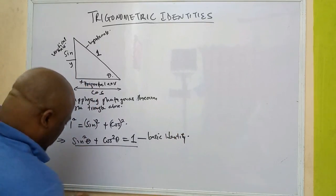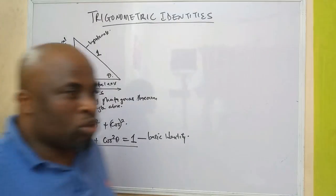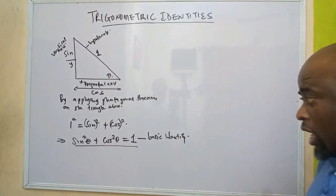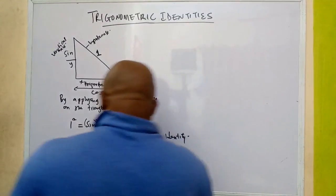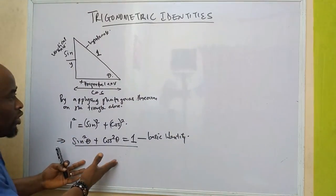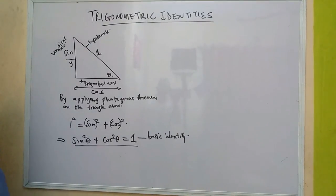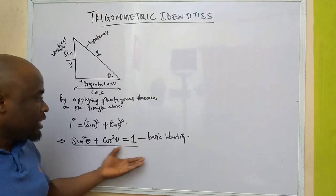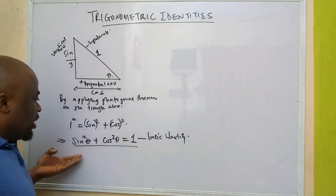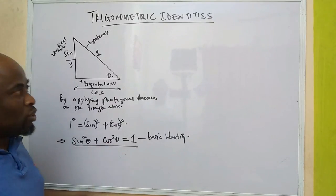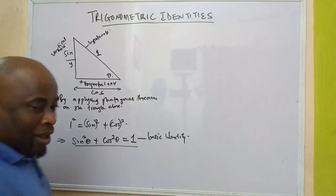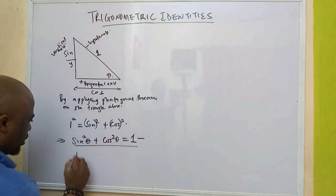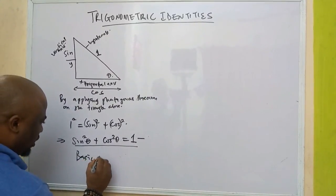That is the first thing we are going to have. So from here again, we can do other things. We are going to get our different identities from this first identity we have gotten, which is sin squared theta plus cos squared theta equals one. So this is the basic identity.